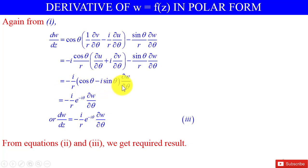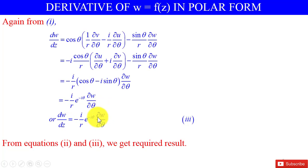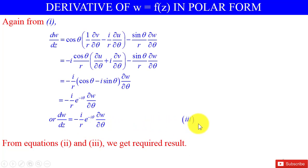This equals (-i/r) · e^(-iθ) · ∂w/∂θ. Therefore, dw/dz = (-i/r) · e^(-iθ) · ∂w/∂θ. This is equation number 3. From equations 2 and 3, we get the required result.